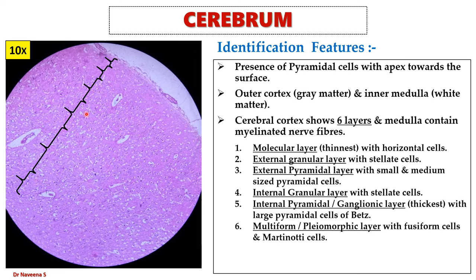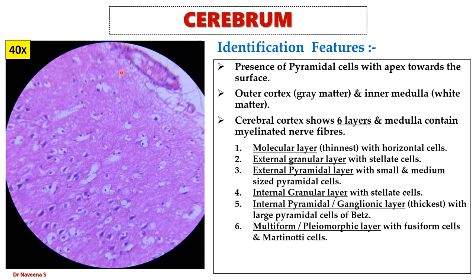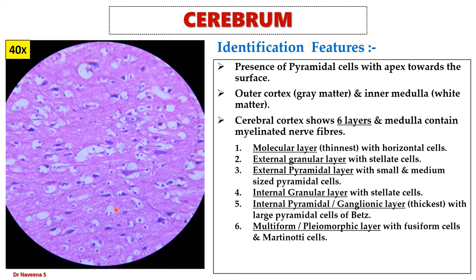Let's see the cells of different layers of the cerebral cortex under high magnification. Here is the outermost molecular layer with horizontal cells. Here is the external granular layer with stellate cells, which also shows small-sized pyramidal cells very few in number. The third layer, external pyramidal layer, shows small and medium-sized pyramidal cells, with very few stellate cells. The fifth layer, internal pyramidal or ganglionic layer, shows large pyramidal cells — these are cells of Betz. The deepest layer, multiform or pleomorphic layer, shows fusiform cells and larger cells of Martinotti.